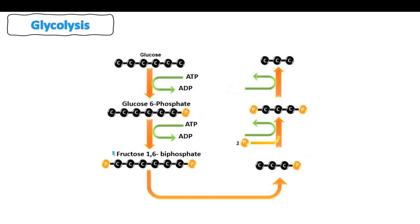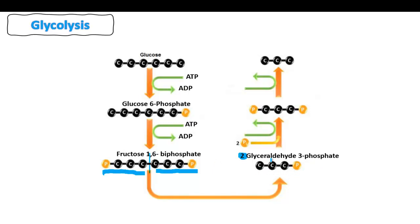The third step is that we take this fructose-1,6-bisphosphate, which is a six-carbon molecule, and split it in half into two three-carbon molecules, each one with a phosphate. We call each of these three-carbon molecules glyceraldehyde-3-phosphate, because the phosphate is linked to the third carbon. So we are going to have two glyceraldehyde-3-phosphate molecules.